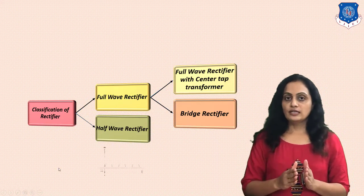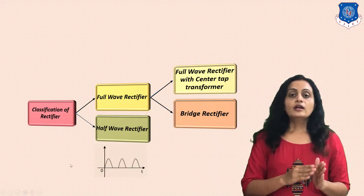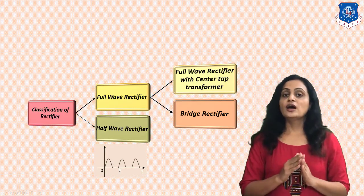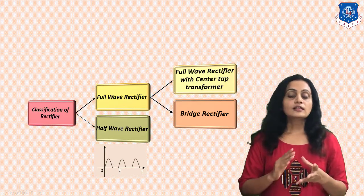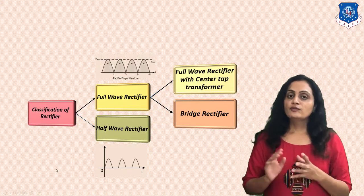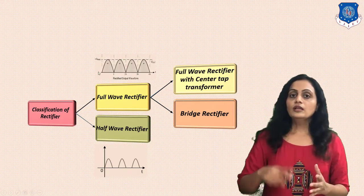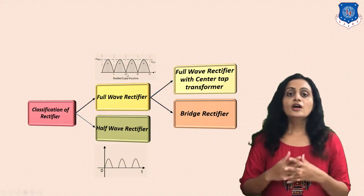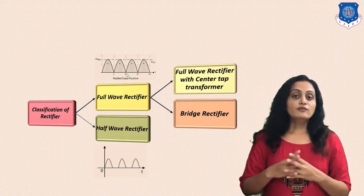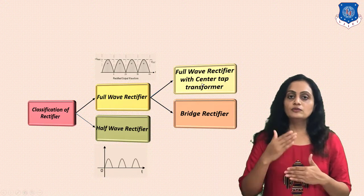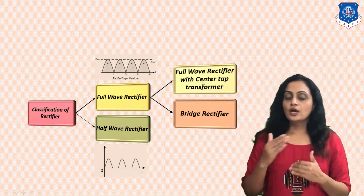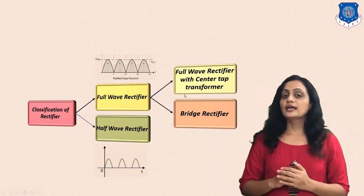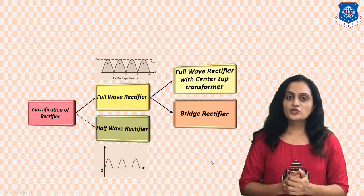In the half wave rectifier, for half of the input cycle we are getting the output, and for the other half of the input cycle the output is zero. In the full wave rectifier, for the full input cycle we are getting the output — that's why it is referred to as the full wave rectifier. In full wave rectifier we have two types: one is the full wave rectifier with the center tap transformer and the second one is the bridge rectifier.